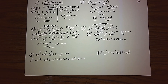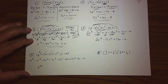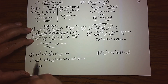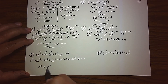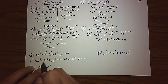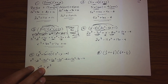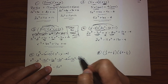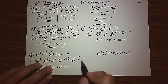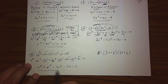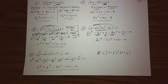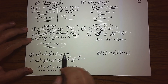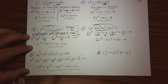Now we simplify. The highest degree term is x to the 4th — it stands alone. For x cubed: negative x cubed plus 2x cubed gives positive x cubed. For x squared: negative 4 minus 2 plus 3 gives negative 3x squared. For x terms: negative 8x plus negative 3x gives negative 11x. And negative 12 is the only constant. So the final answer is x to the 4th plus x cubed minus 3x squared minus 11x minus 12. Pretty tough with bigger polynomials — with 4 terms times 4 terms you'd have 16 distributions!